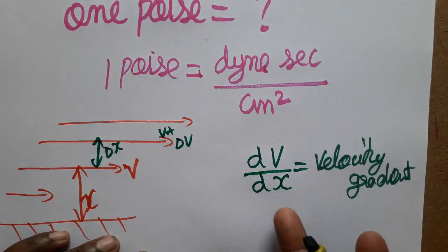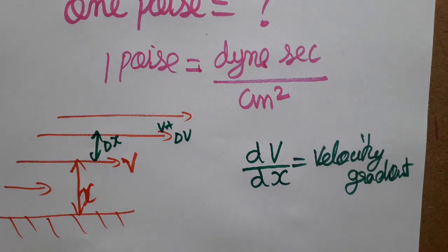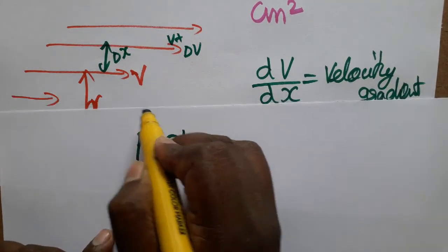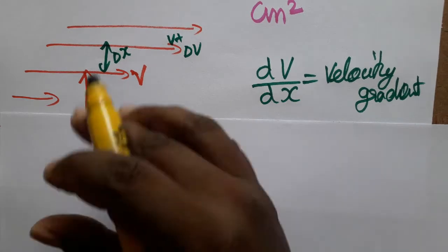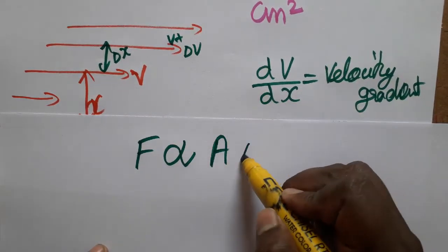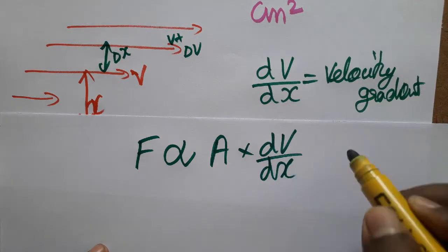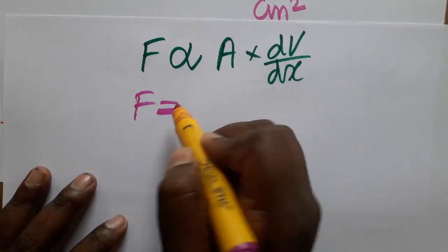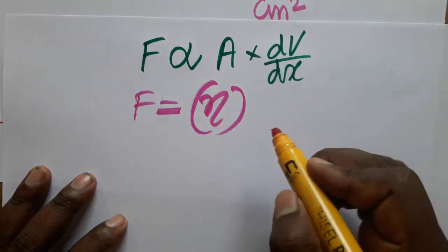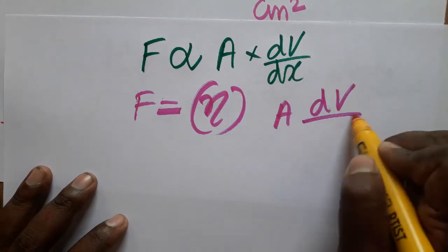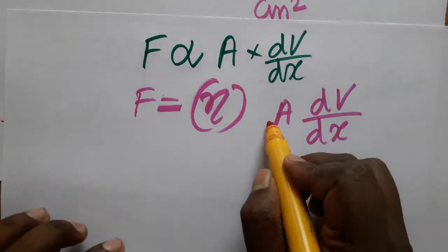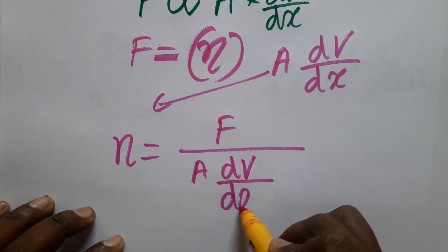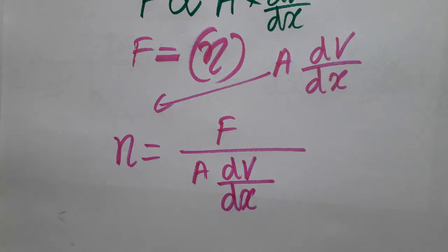Now we are going to discuss the relation between poise and velocity gradient. The internal friction force of the liquid is directly proportional to the area of the liquid flowing and the velocity gradient dv by dx. When introducing the new term — the coefficient of viscosity, eta — we set it equal to the constant. So the coefficient of viscosity eta equals F divided by A times dv by dx.